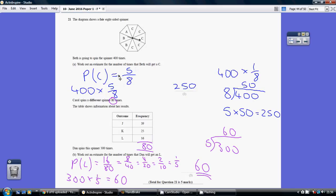Think of the probability of a C if you spin the spinner one time. Well, we're spinning it 400 times, so we have to do 400 times 5 eighths.